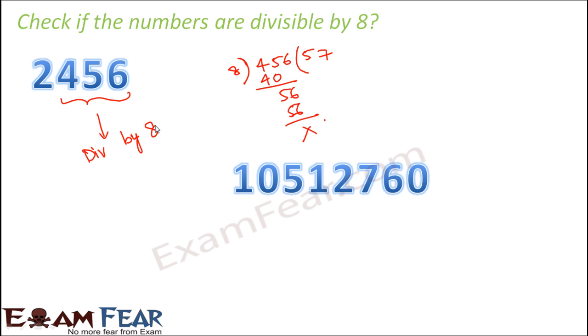Let us look at the next number. It is 10512760. So again we will just focus on the last 3 digits, that is 760. Now if you actually divide 760 by 8, what do you get? 8 9s are 72, so this is 40. 8 5s are 40. And this is also 760, is also divisible by 8. Therefore this entire number is also divisible by 8.